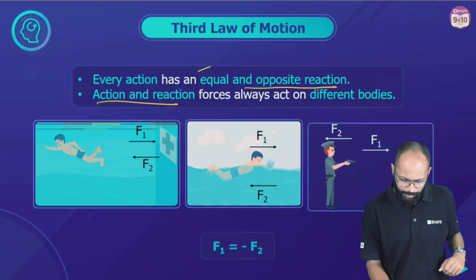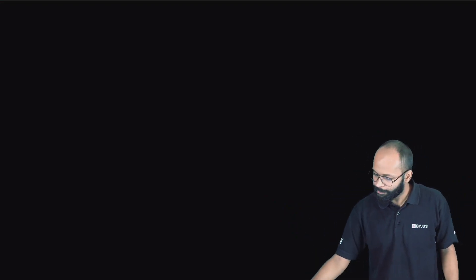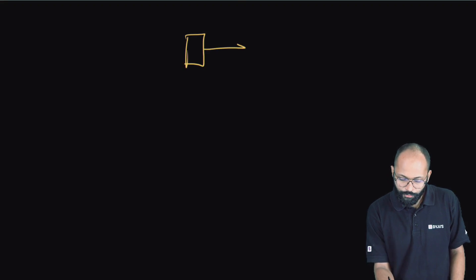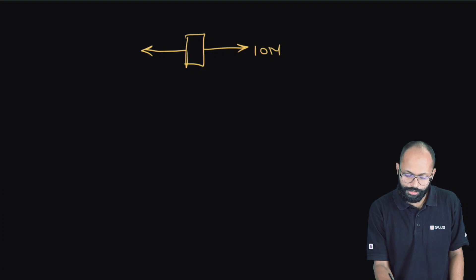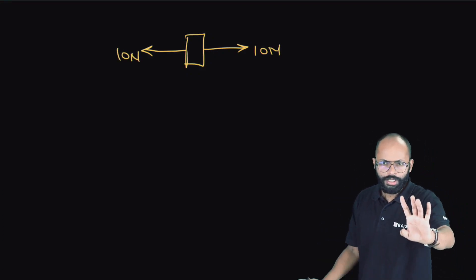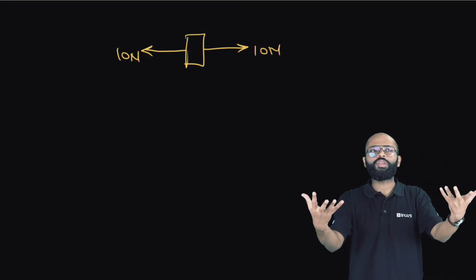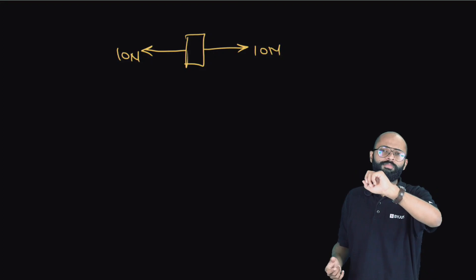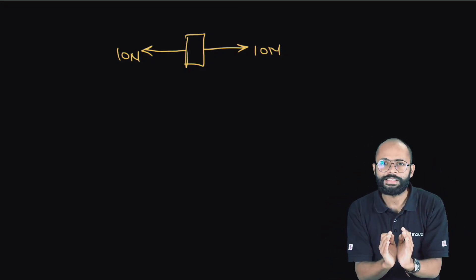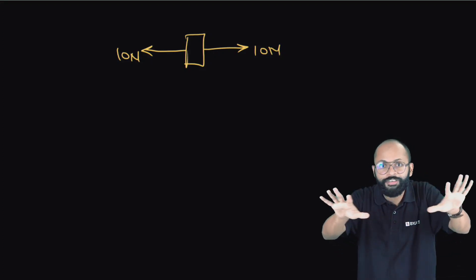Why can't action and reaction forces cancel each other? Forces cancel when there is a body with one force acting in one direction and another force acting in the opposite direction on that same body — for example, two friends pulling you in opposite directions. Force cancels when forces act on one body. If both bodies are different, how can they cancel? That body doesn't experience this force, and this body doesn't experience that force. Forces cancel when they act on one body — you can't cancel them when they act on different bodies.